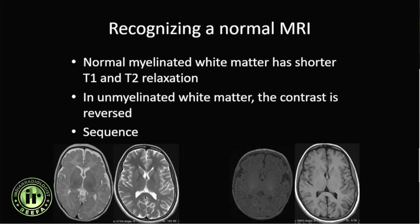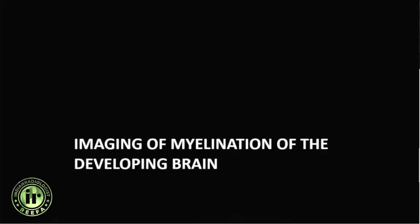First, it is most important to learn how to recognize a normal MRI. The T2 and T1 images shown represent a normal myelinated adult brain. In an unmyelinated brain, the challenge is that this contrast is reversed, and because of the abnormal hyperintense signal in the white matter, we may mistake the normally unmyelinated white matter for some abnormal metabolic disorder.